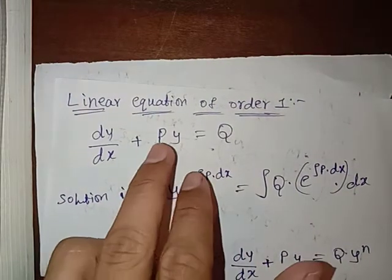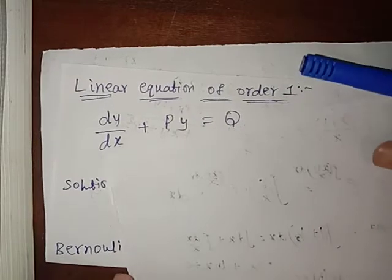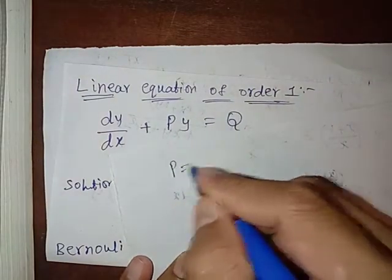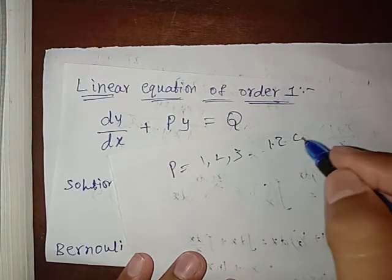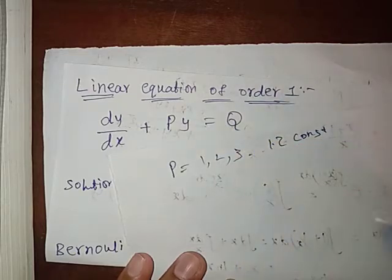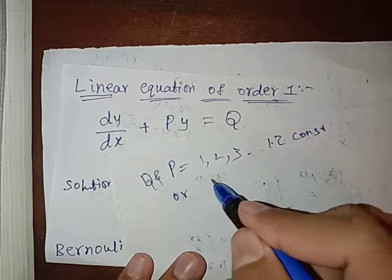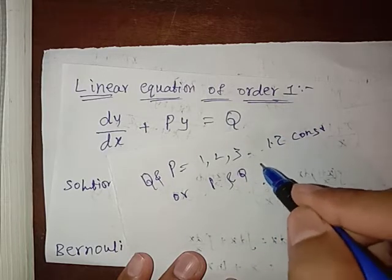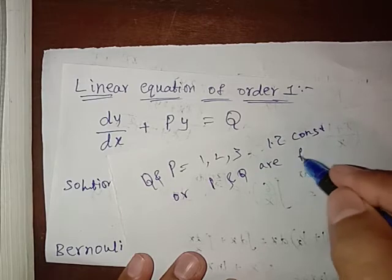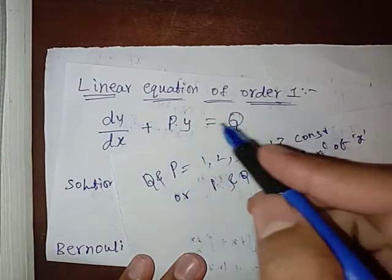Here, p and q may be constant values — such as 1, 2, 3, or decimals like 1.1 or 1.2 — or they must be functions of x only. In dy/dx + py = q, p and q are functions of x only.